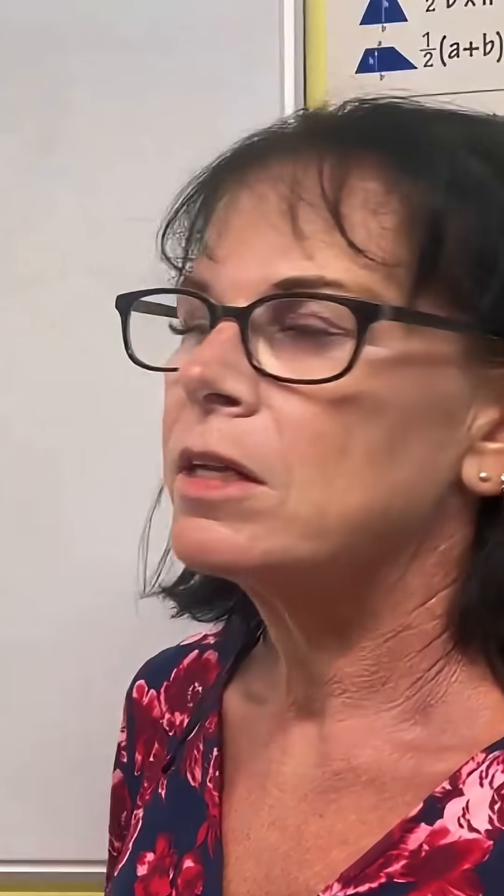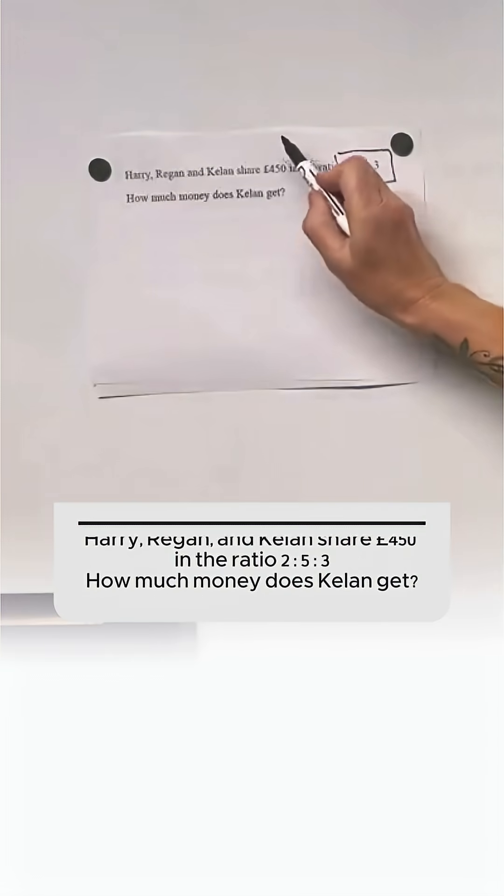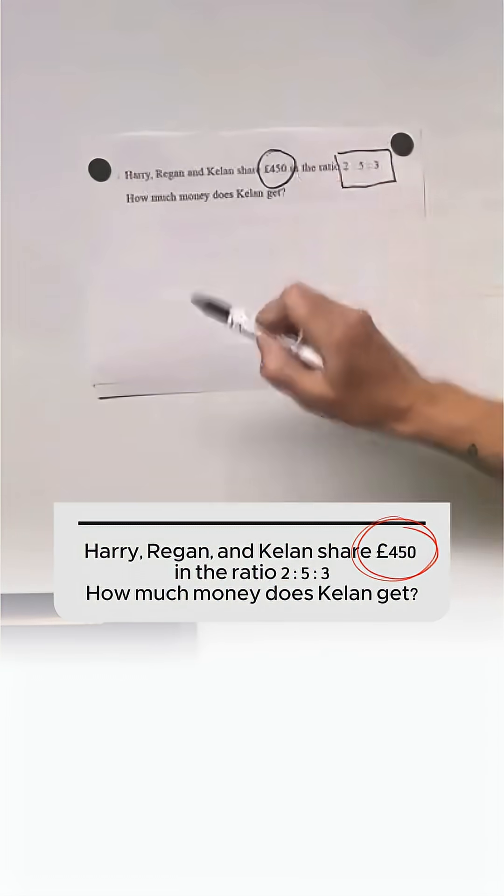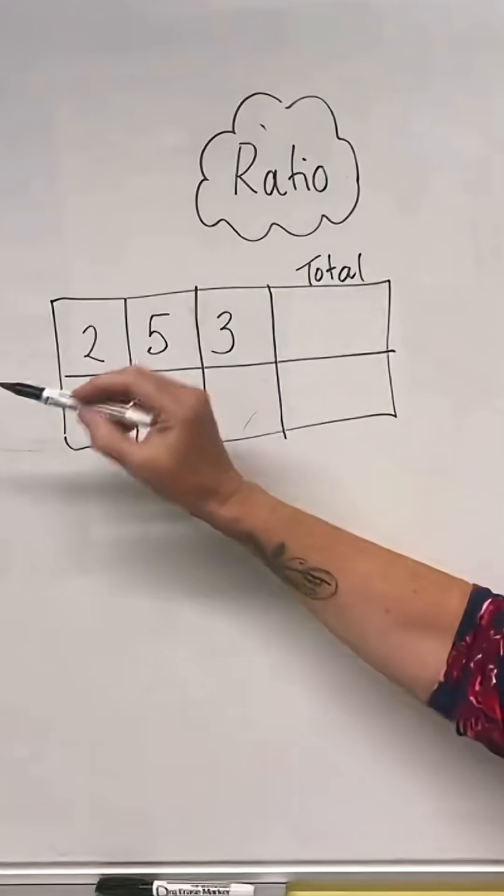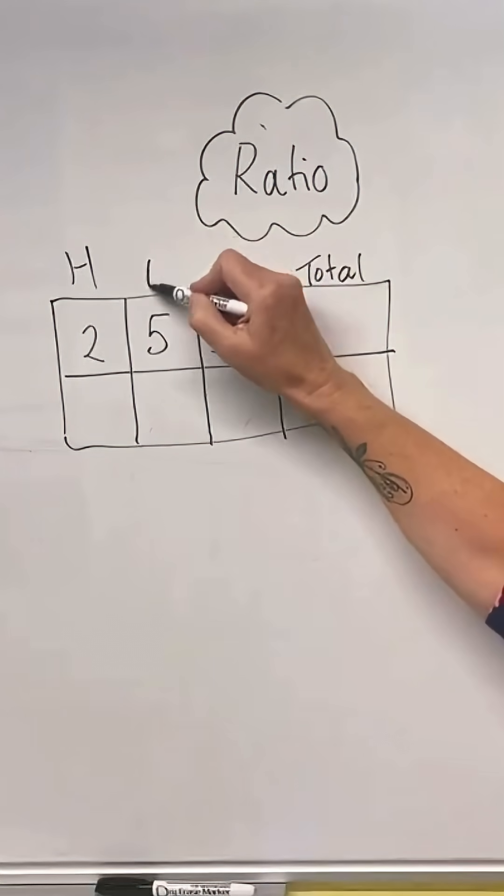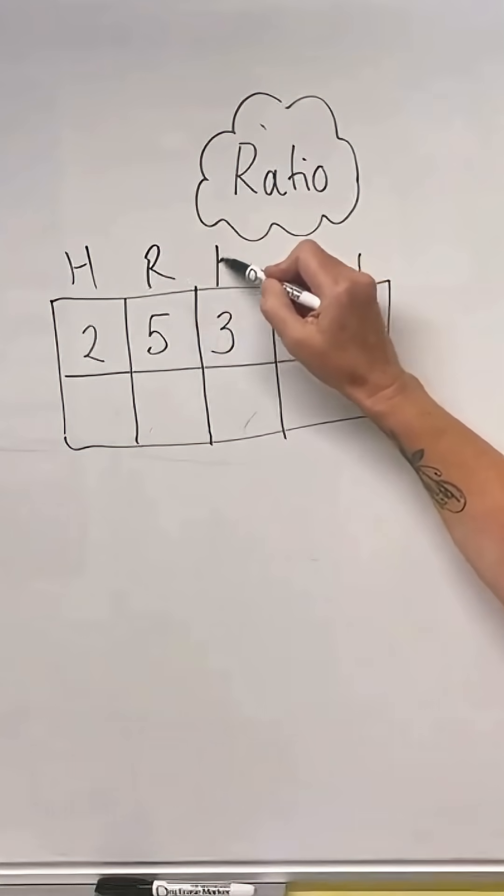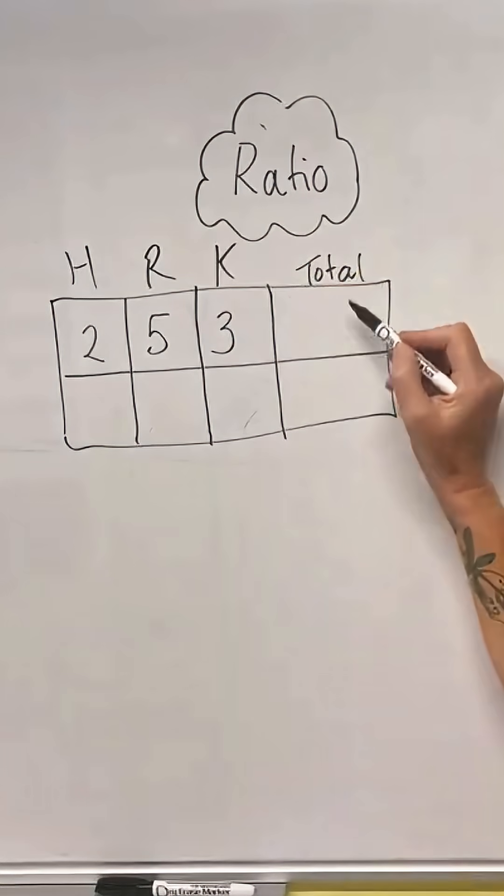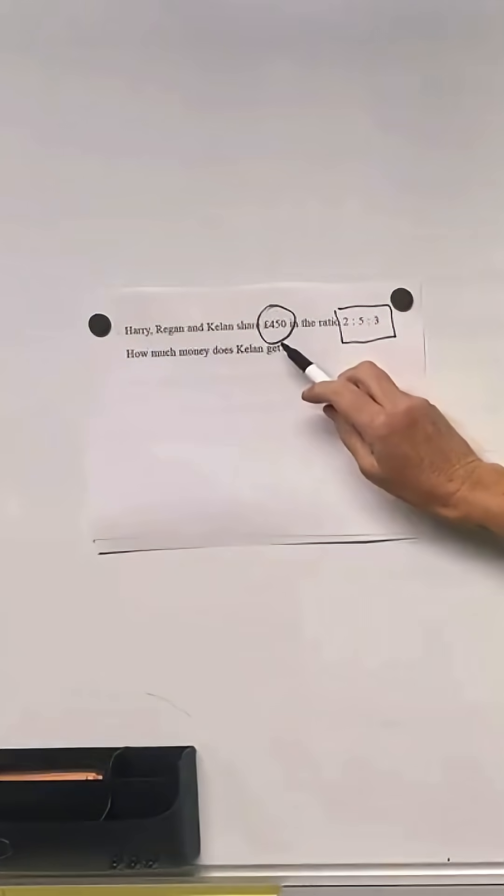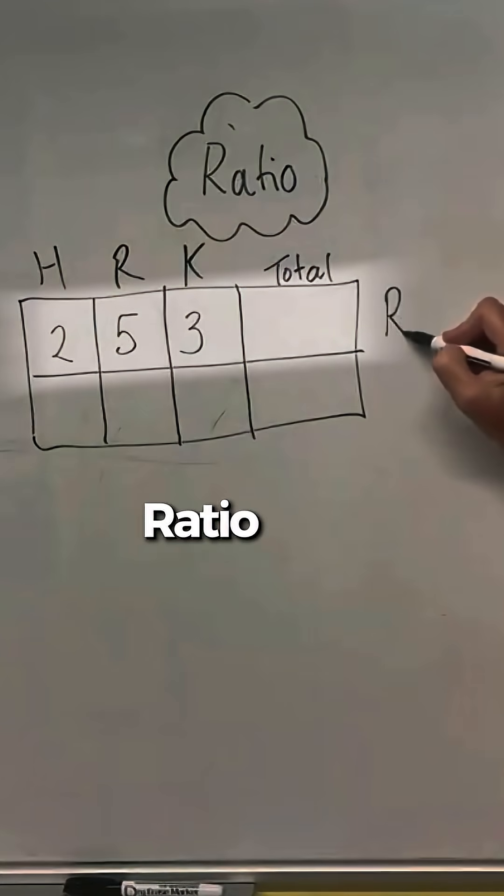Now in this question there will be one other number, so the other number here is 450. Now does that 450 belong to Harry, Reagan, or Keelan, or is it the total? It's the total, they're sharing 450.